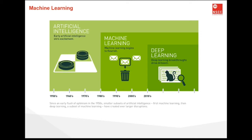The need for machine learning is increasing day by day. The reason is that it is capable of doing tasks that are too complex for a person to implement directly. As humans, we have limitations — we cannot access huge amounts of data manually. So for this, we need computer systems, and here comes machine learning to make things easier for us.